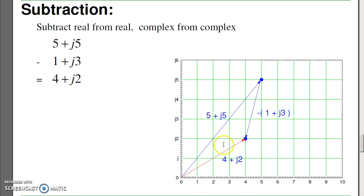Subtraction also works. If I have a number 5 plus j 5 and I subtract 1 plus j 3, I wind up at 4 plus j 2. Just take the real part, subtract, 5 minus 1 is 4. Take the complex part, subtract, 5 minus 3 is 2. This is 4 plus j 2.